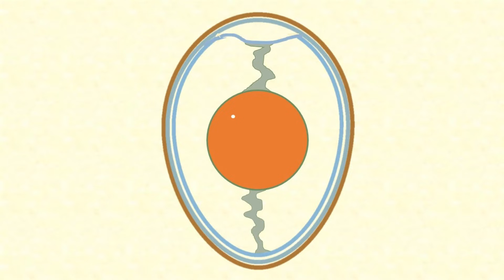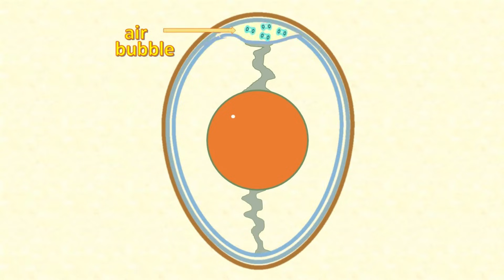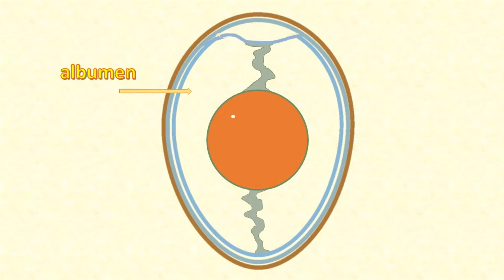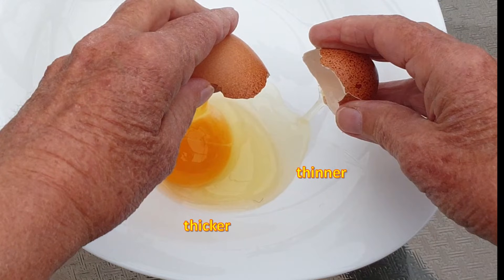Inside the hard shell layer are two membranes: an outer one close to the shell and an inner one that sits closely around the egg contents. As days pass after the egg is laid, an air bubble forms and grows in between these two membranes. If eventually a chick develops in the egg, the chick pokes its beak into this air bubble to breathe just before it hatches. The egg white, or albumin, is not completely homogenous. It's thinner near the outer membrane and thicker near the yolk.